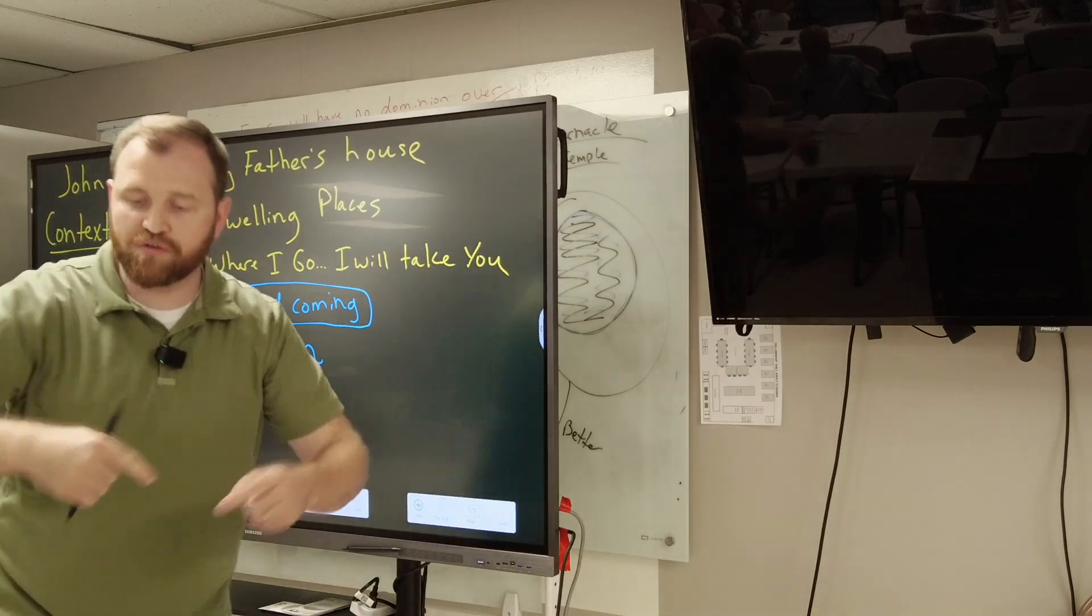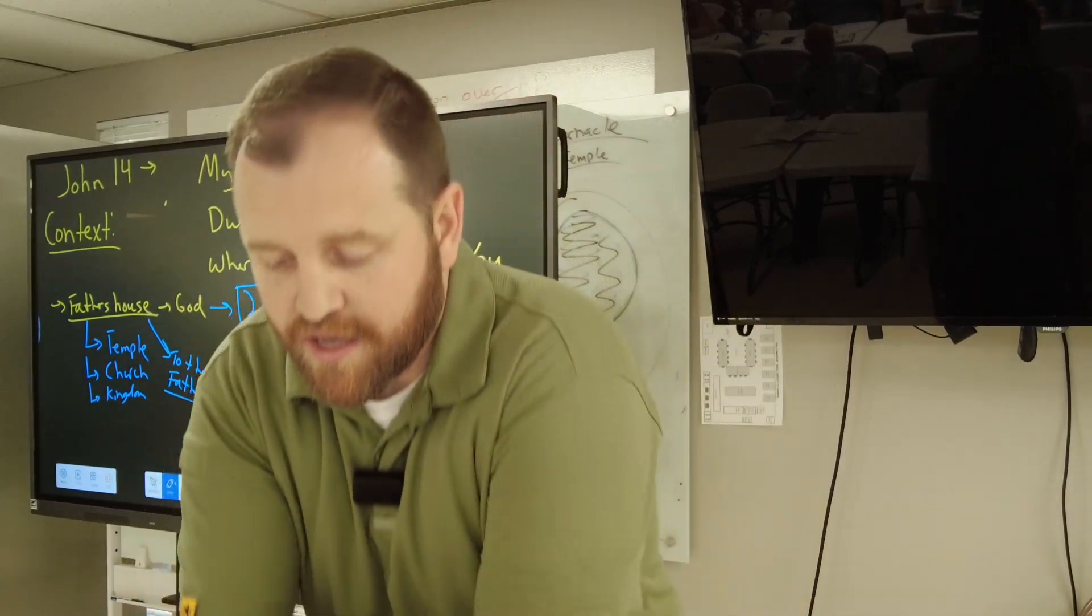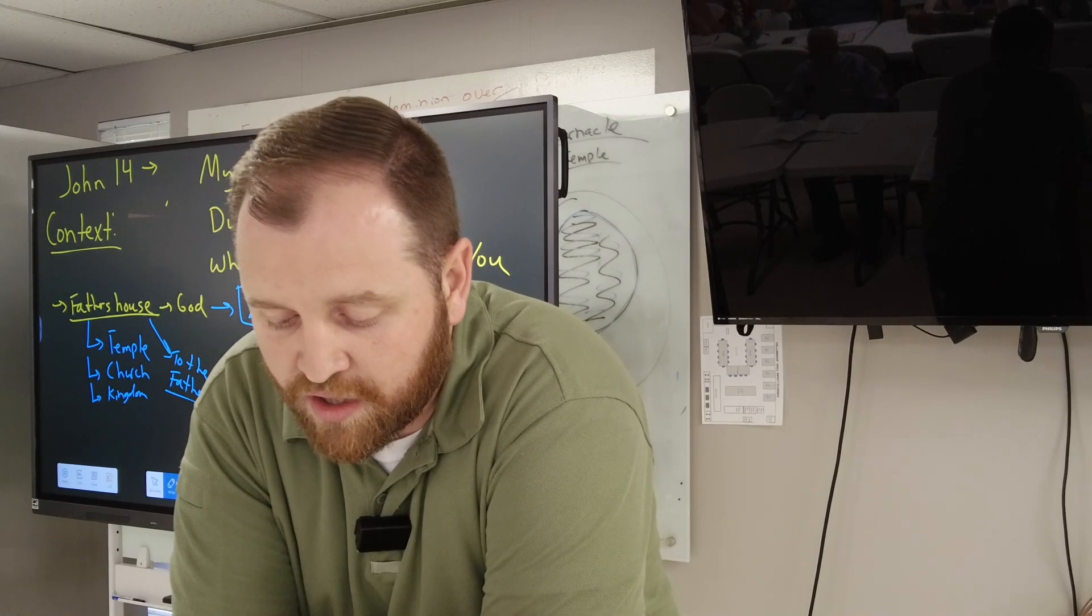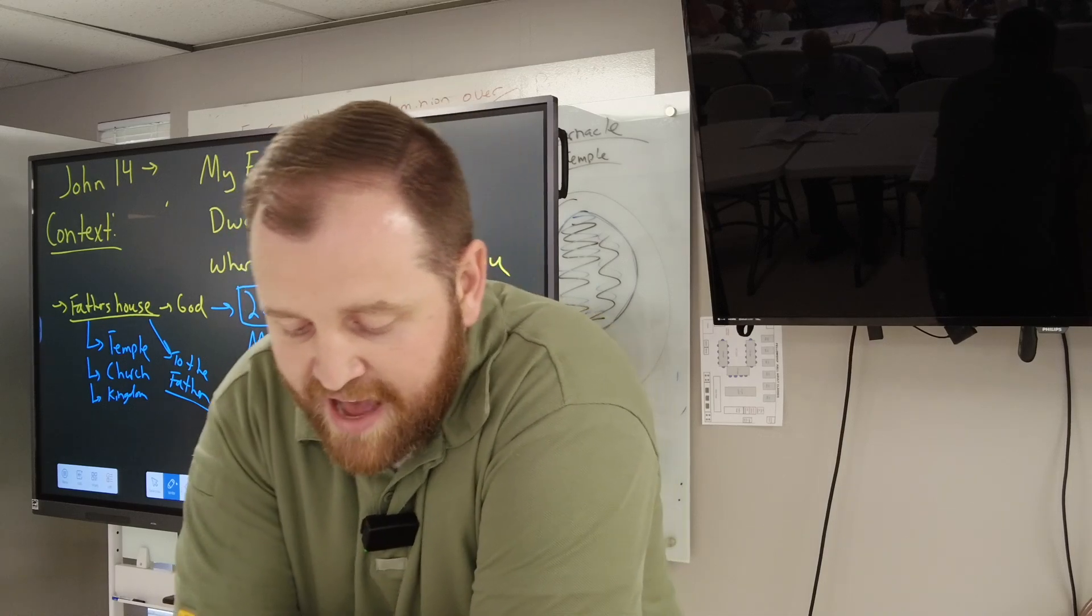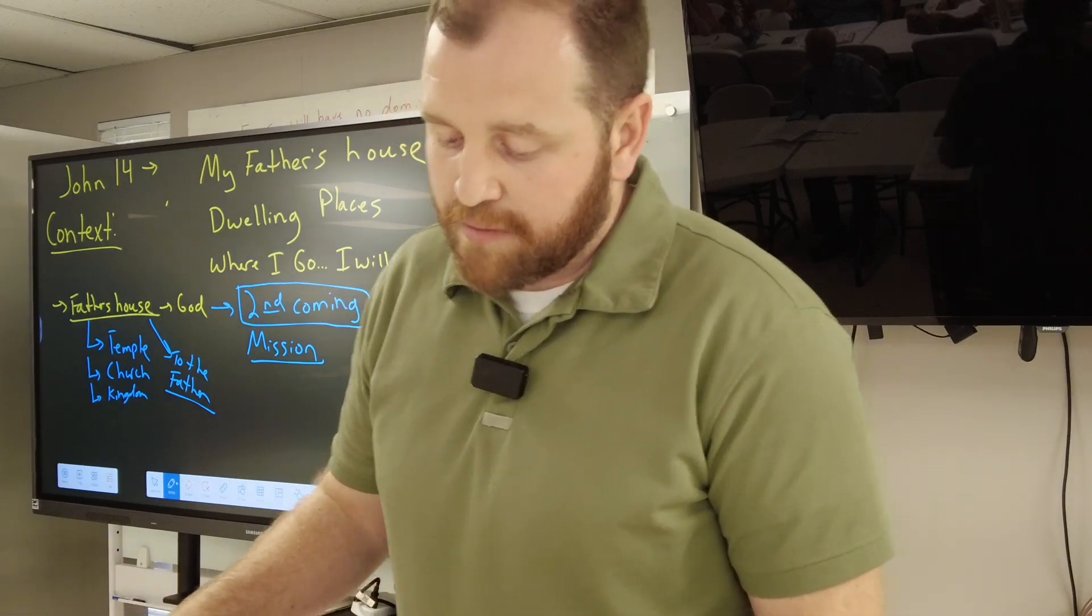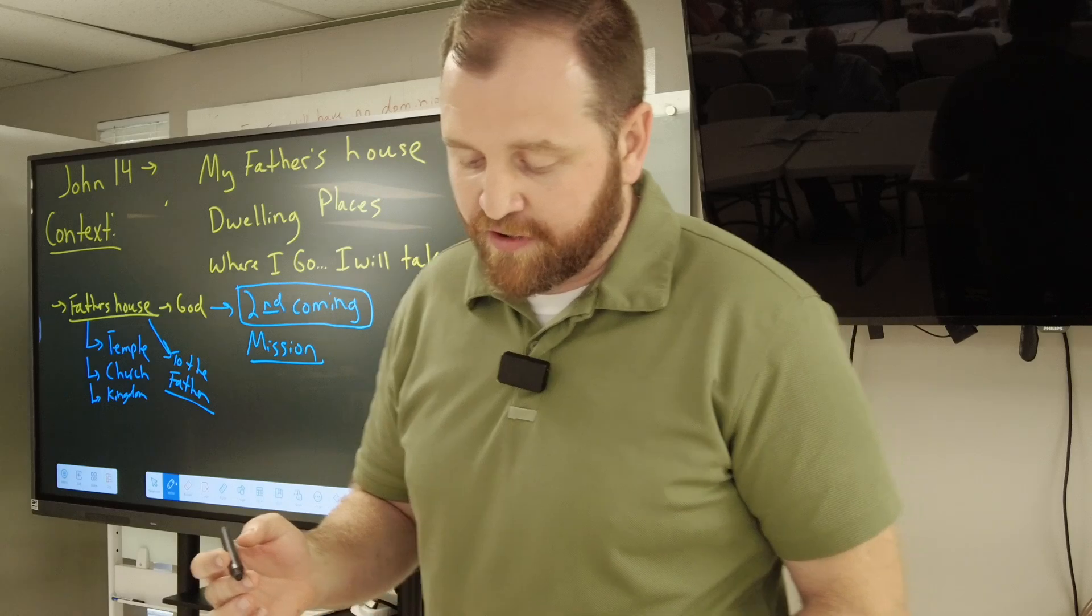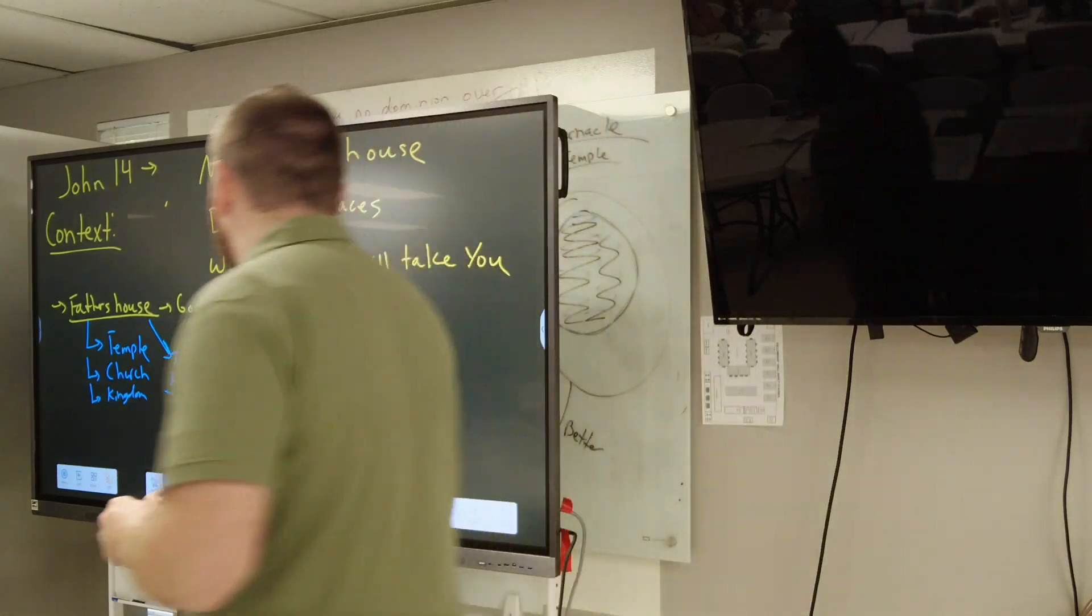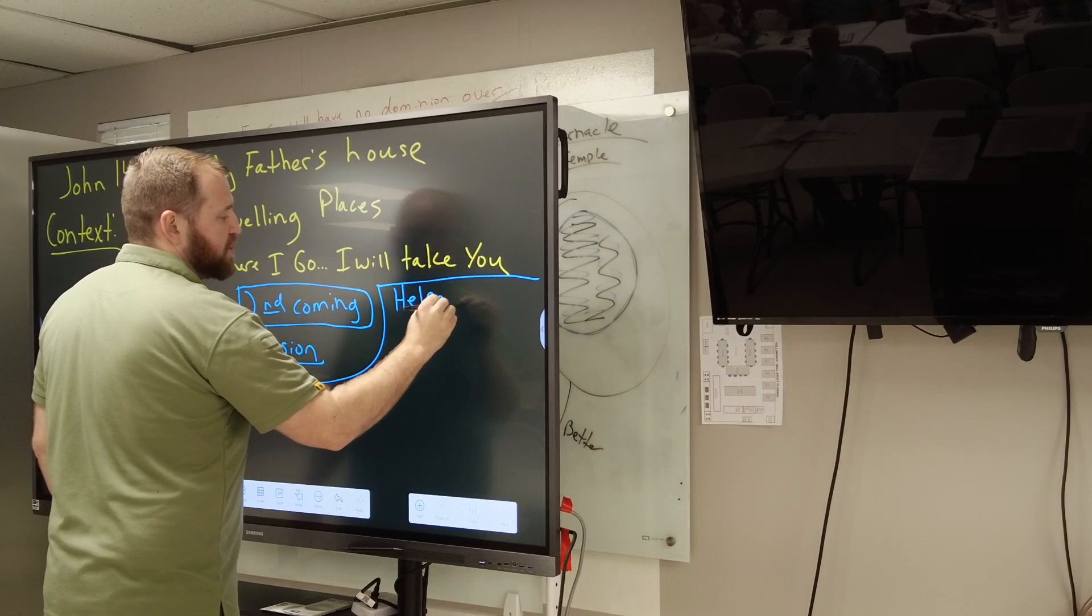In my father's house are many rooms. If it were not so, I would have told you that I go to prepare a place for you. And if I go and prepare a place for you, I will come again. I will take you to myself, that where I am there you may be also. First, who is he talking to? The 12, the apostles. Specifically, this is the night before his betrayal.